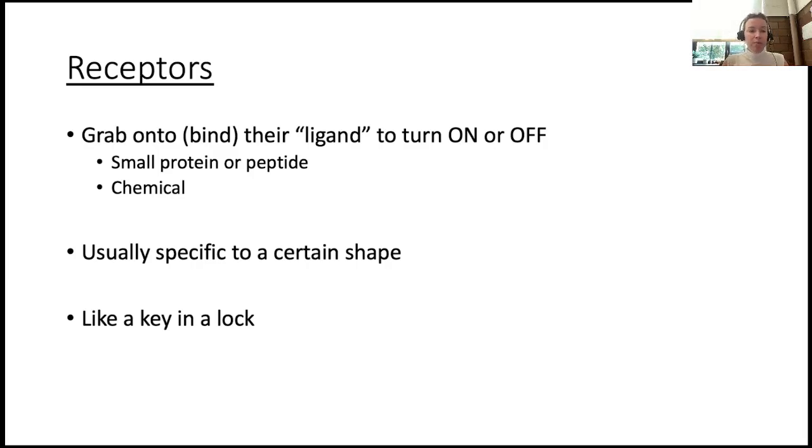Let's start with receptors. So receptors are a type of protein that grab on to something. They receive something. And the thing that they grab on to, or bind is the chemist's word, is called a ligand. And so when they grab on to this thing, this turns the receptor on so it can do its thing, or it turns it off so it will stop. And this ligand, this thing that the receptor binds to, could be a small protein, could be a chemical, a wide variety of things.